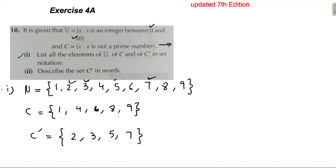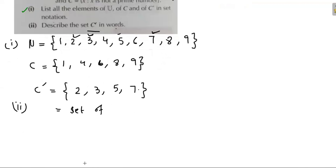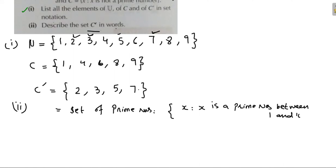Part one is complete. For part two, describe the set C'. The elements of C' are 2, 3, 5, 7 — these are prime numbers. So C' is the set of prime numbers. We write it in set notation as: C' = {x | x is a prime number between 1 and 10}. This is our answer.